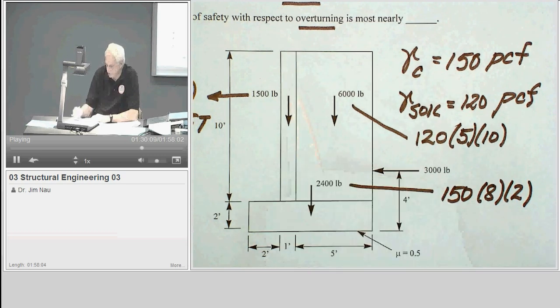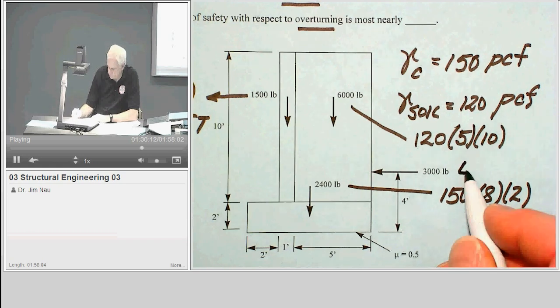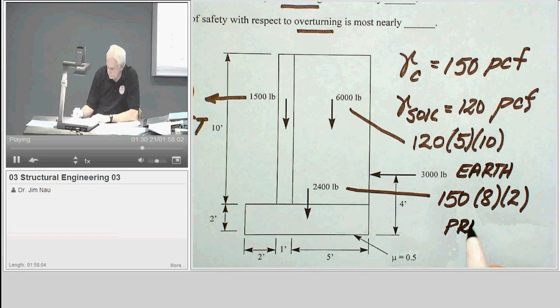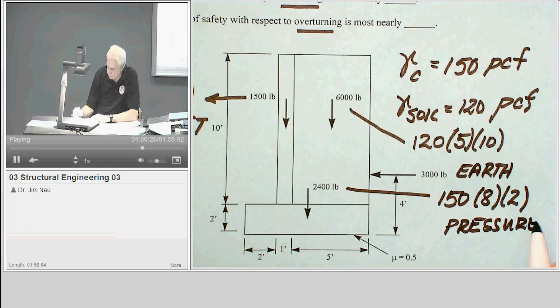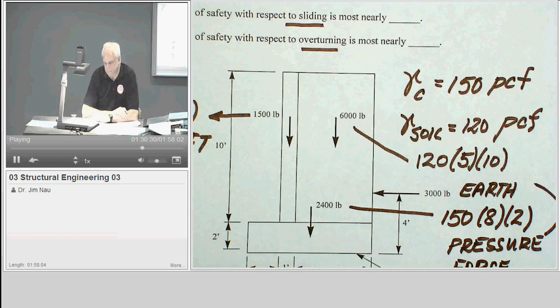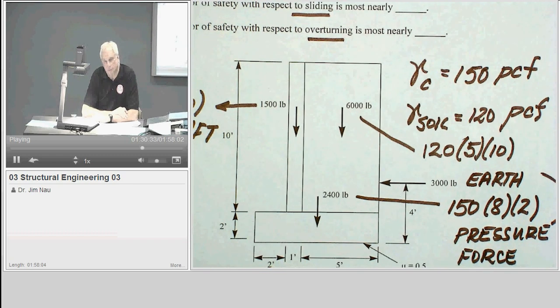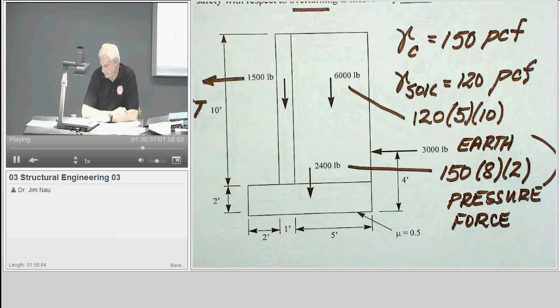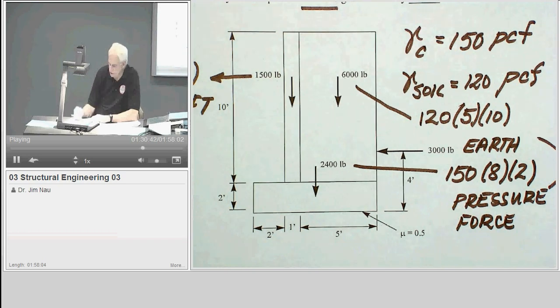So there's the earth pressure force that's given. There are formulas for it, but now it becomes a geotechnical problem. So that's the earth pressure force, 3,000 pounds. There are formulas for that, earth pressure given the type of soil it is. Angle of repose, friction angle, whatever they call it these days. So it's 3,000 pounds at 4 feet.